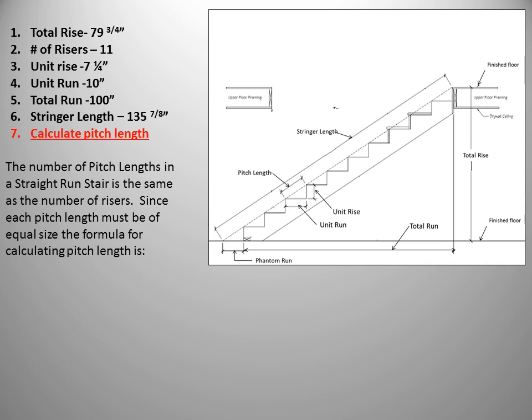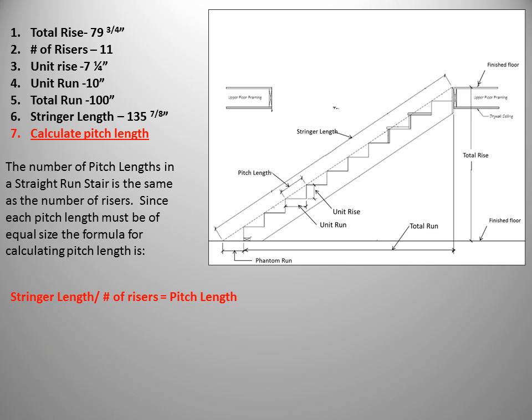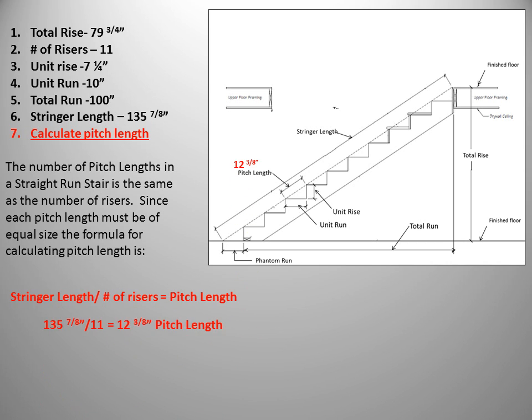The quantity of pitch lengths in a straight run stair is the same as the number of risers. Since each pitch length must be of equal size, the formula for calculating pitch length is stringer length divided by the number of risers. Since our stringer is 135 and 7 eighths inches long, we divide by 11 risers to get a pitch length of 12 and 3 eighths inches.